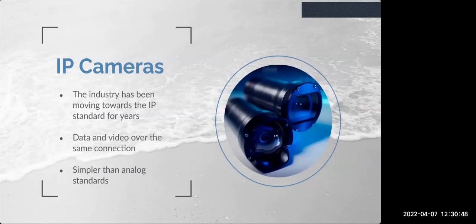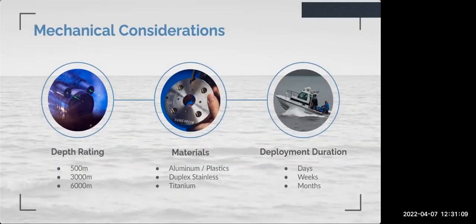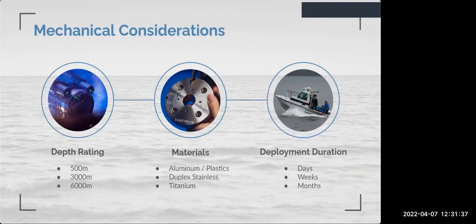The industry has been moving to the IP camera standard for a number of years because it simplifies subsea connections and multiplexers. An IP camera outputs video and data over an ethernet connection. It is simpler than analog video standards and is a digital standard, so there's less frame loss due to noise. For materials and depth ratings: aluminum and plastics are generally good for 500 meters or less; duplex stainless steel is typically used up to 3,000 meters but is heavy. If deploying for weeks or months, even at depths of 300 to 1,000 feet, consider titanium and plastics for corrosion resistance and light weight. This informed our decision to standardize on 6,000-meter titanium for all equipment at Subsea.